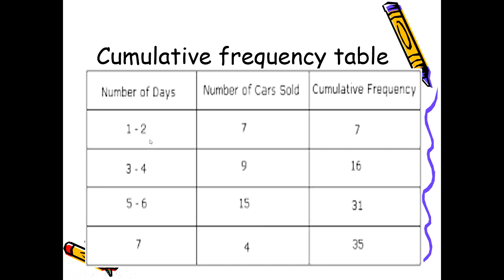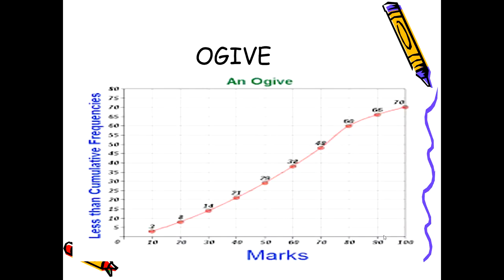For example, if on days one and two, seven cars were sold, and on days three and four, nine cars were sold, the cumulative frequency at the end of day four is seven plus nine equals sixteen cars sold. The cumulative frequency column continuously increases until it reaches the maximum at the end. When plotted on a graph — with the independent variable on the x-axis and cumulative frequency on the y-axis — this shows a continuous rise. This presentation is known as an Ogive.